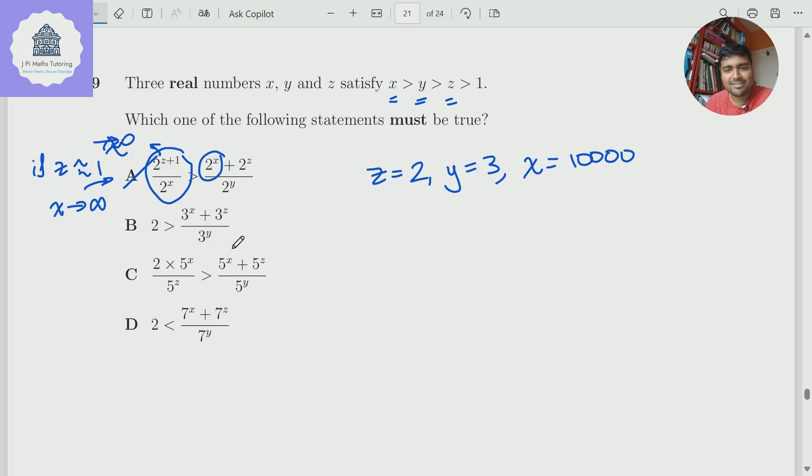Option B, we've got 2 is bigger than 3 to the x plus 3 to the z over 3 to the y. Again, we want to think about x, y, and z taking limiting value. So is this true for all values of x, y, and z? But again, no, because you can see here, kind of similar to the first one, the right-hand side I can make as big as I want by making x go to infinity and making y and z just nice and bounded numbers.